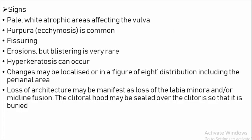Signs: Pale white atrophic areas affecting the vulva. Purpura is common. Fissuring, erosion, and hyperkeratosis can occur. Changes may be localized or in a figure-of-eight distribution, including the perianal area. Loss of architecture may manifest as loss of labia minora and/or midline fusion. The clitoral hood may be sealed over the clitoris, causing phimosis.